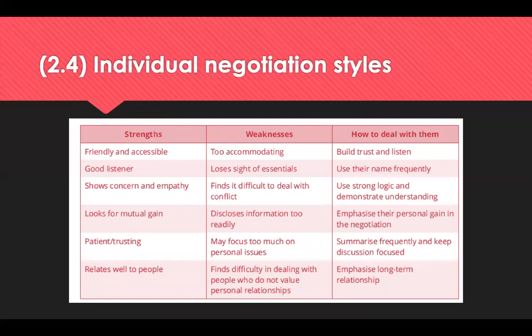There are four main individual negotiation styles: the warm style — a people person; the tough style — a hard-nosed negotiator; the logical style — the numbers person; and the dealer — a trader who loves to bargain. For any individual, one of these styles will be dominant in most circumstances. You can see the strengths, weaknesses and how to deal with each style on screen. When considering your own style and your team members' styles, consider: in what circumstances is your style most effective? In what circumstances would it be least effective? What positive and negative outcomes might result from the use of this style?